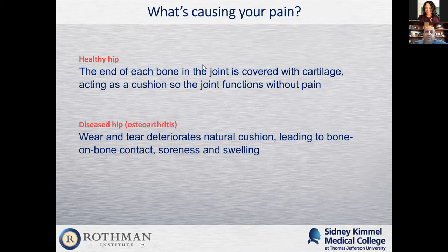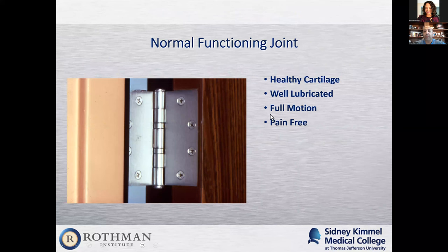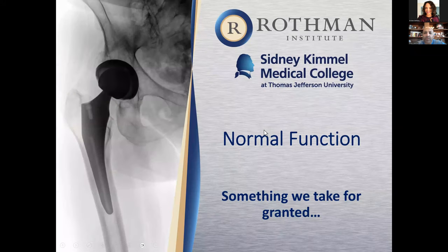What causes pain is: in that healthy hip, you have cartilage rubbing on cartilage. In the diseased hip, you have cartilage breakdown, which leads to bone-on-bone contact. I really liken it to a door hinge. Here's your brand new door hinge — it's like healthy cartilage, well lubricated, has full motion, and is pain-free. Over a lifetime, normal function is something we take for granted. You can walk, get out of a car, exercise, sleep, and just not really have pain.